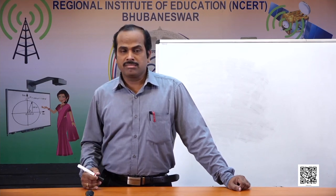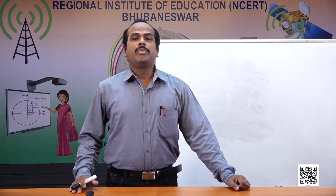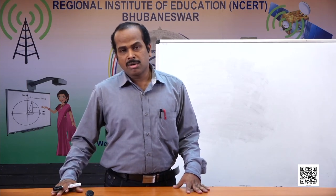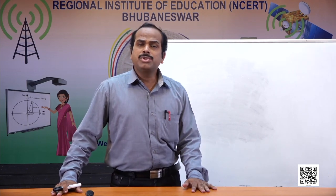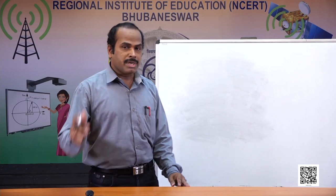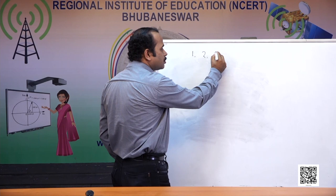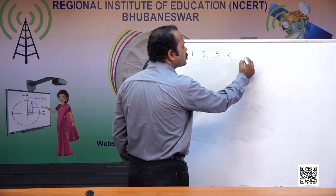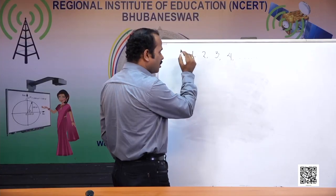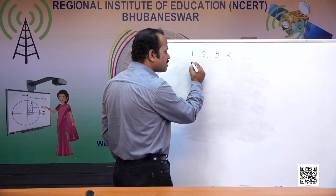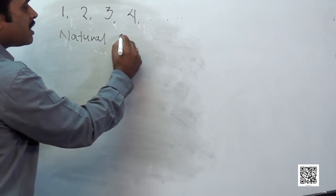We start our number system by knowing the numbers from counting numbers first. When we learned the numbers, we came to know the counting numbers. The numbers we use for counting purpose are called counting numbers — one, two, three, four and so on. These numbers are used for counting purpose, so they are called counting numbers. But we give them a different name: they are called natural numbers.